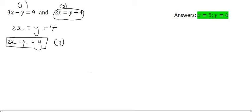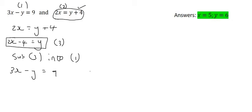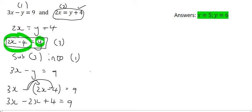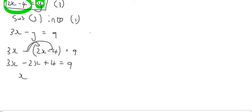Which equation did we use to generate equation number 3? We've already used equation number 2, so we're not going to use that one again. We're going to substitute equation number 3 into equation number 1. Wherever we see a y, we'll replace it with 2x minus 4 — always replace it in brackets. We get 3x, then this minus jumps in to become minus 2x, and plus 4 equals 9. Then 3x minus 2x is just x, and taking 4 to the other side gives 9 minus 4, so x is equal to 5.